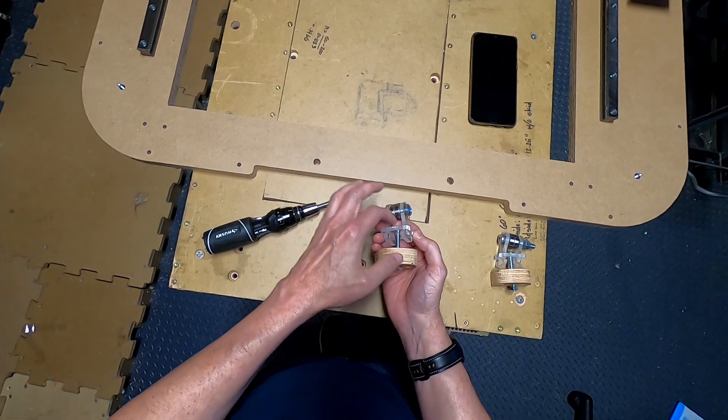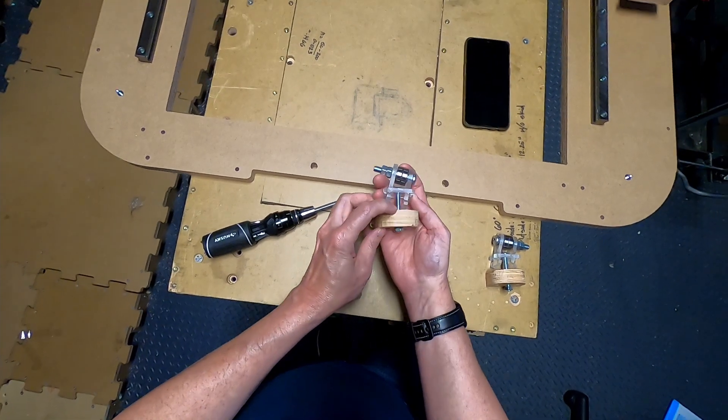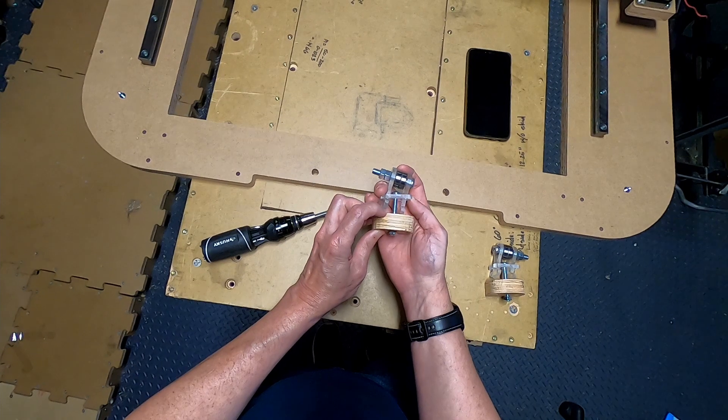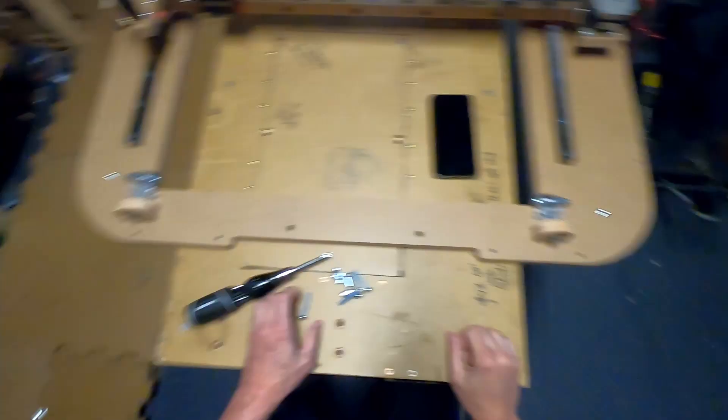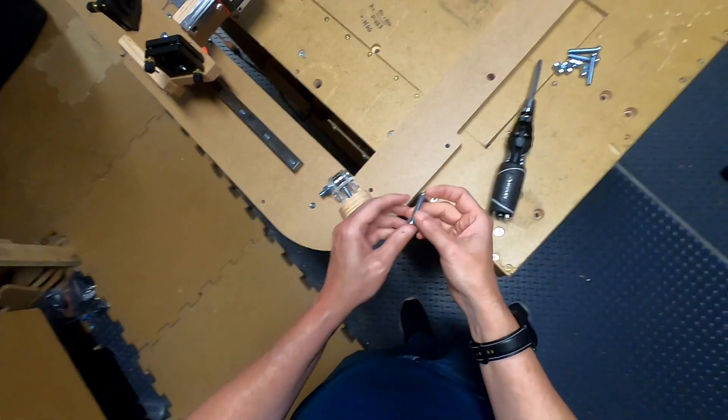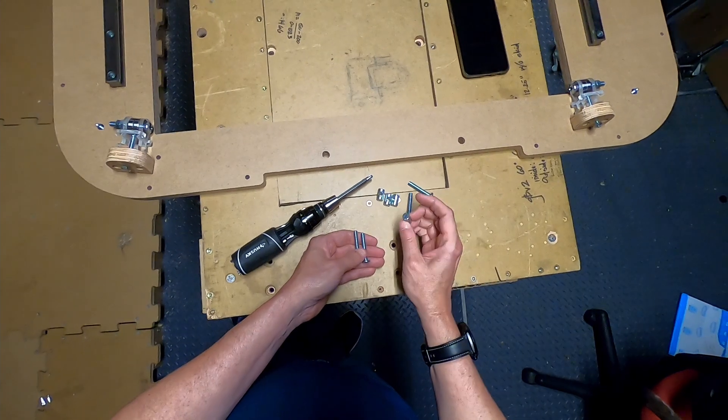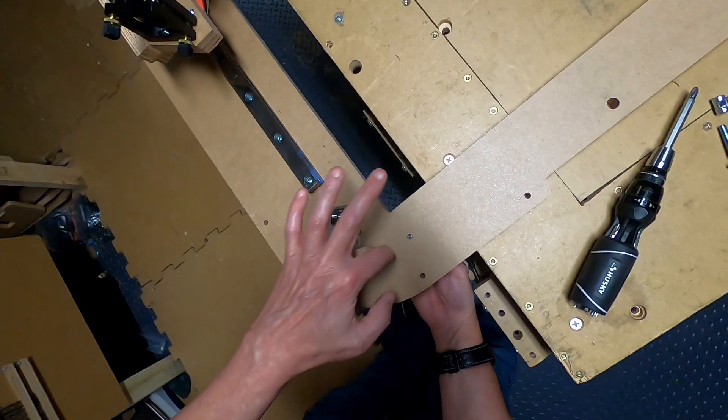Once the belt is in the machine and going around these bearings, you're going to use this nut to tension the entire belt run. Now we can go ahead and mount this piece onto the base. We'll need four quarter inch by one and a half inch screws and four cross dowels. We'll use these two holes.